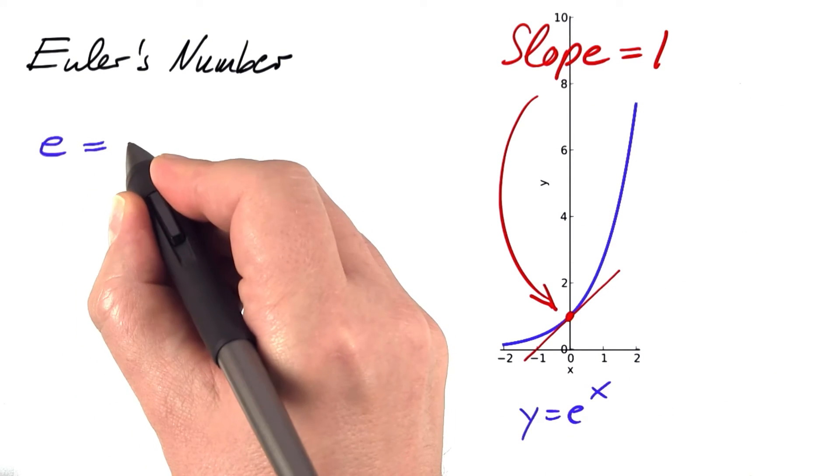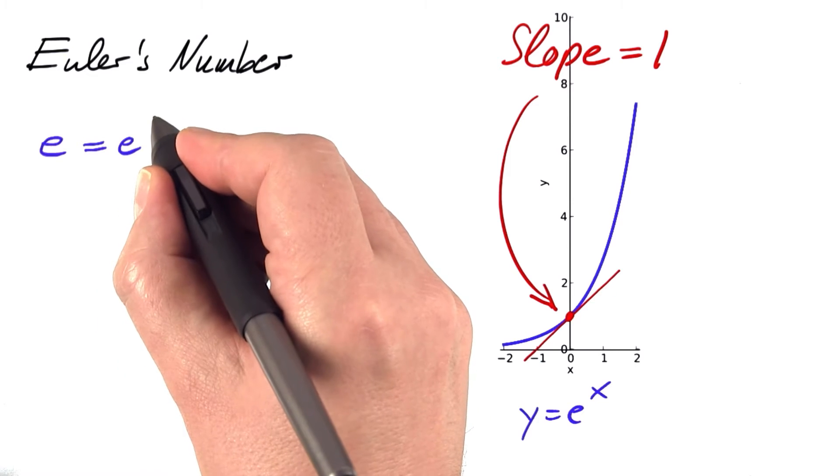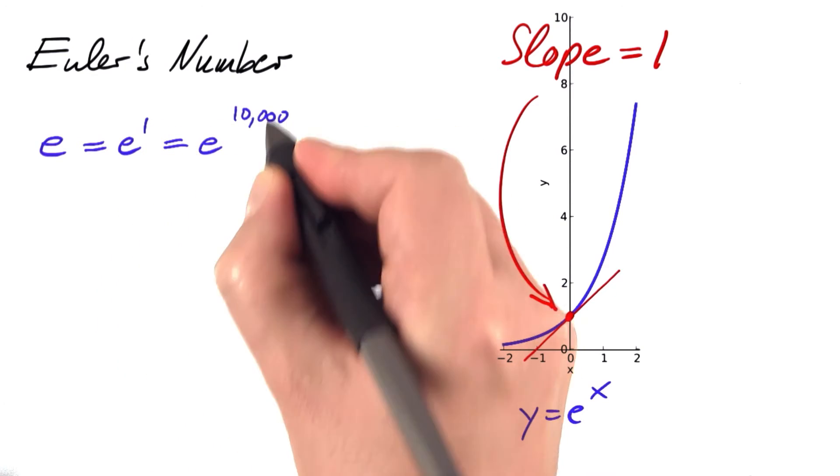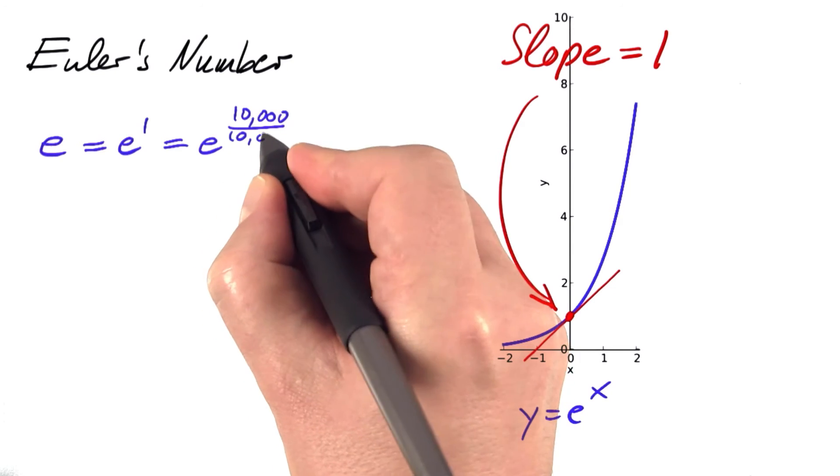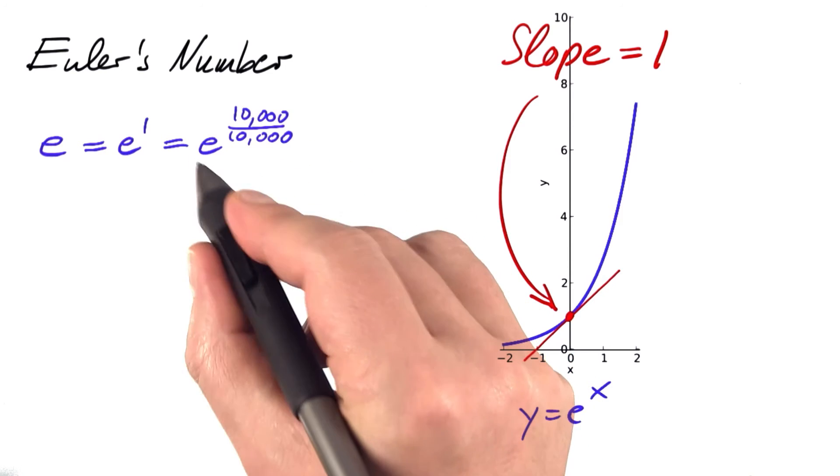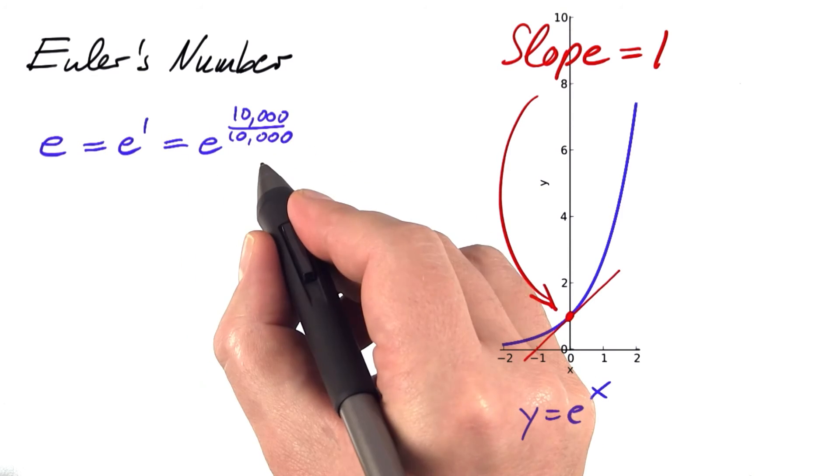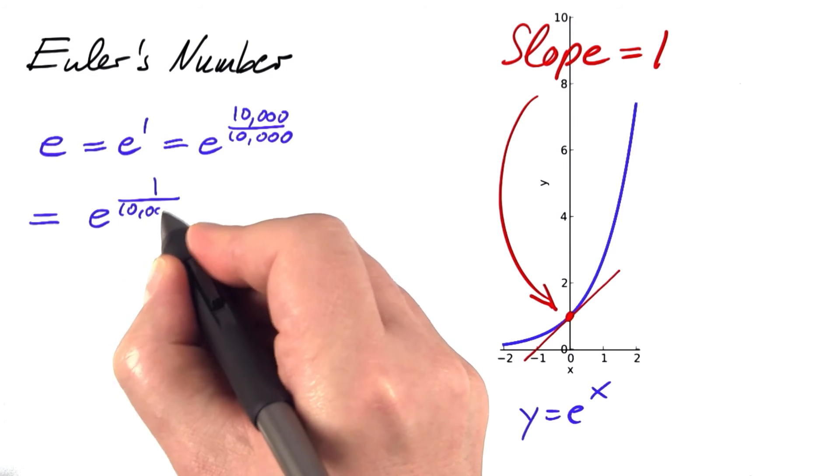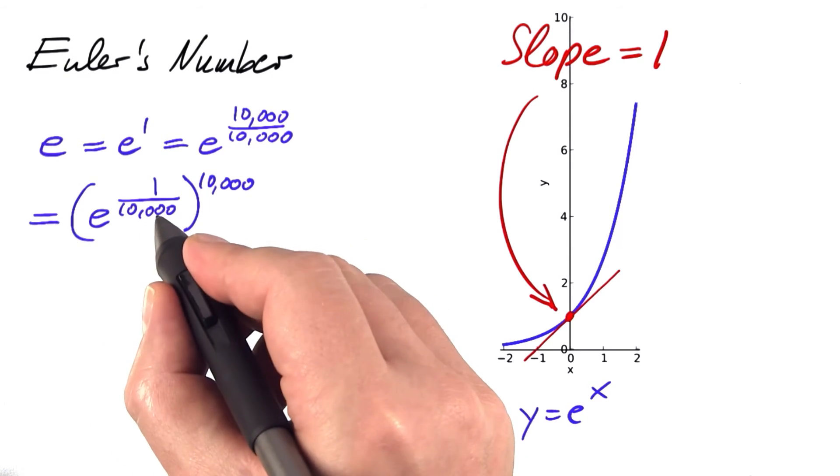e is nothing but e to the first power. Let me write this one as 10,000 divided by 10,000. Up to now, this looks completely crazy. Where am I going? I'm going to apply the laws for powers. This is e to the 1 over 10,000 to the power of 10,000.